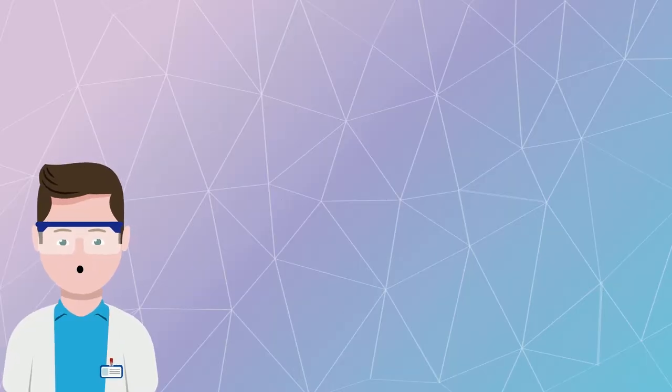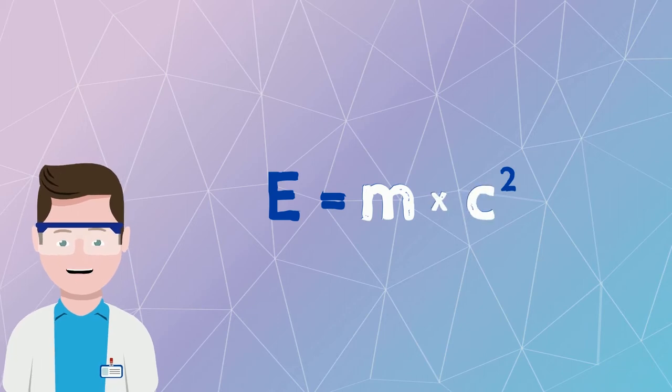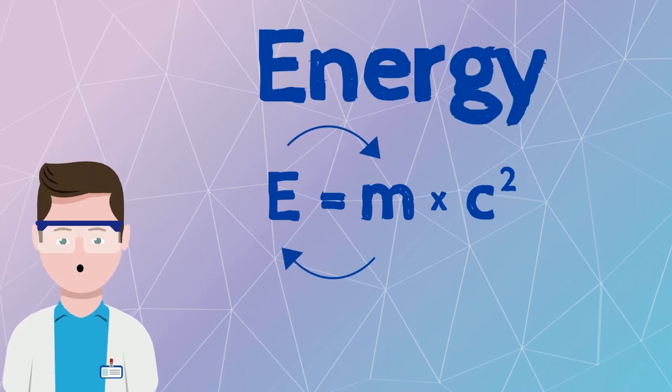Remember this famous equation here? Energy equals mass times c squared, where c is the light speed. Okay, so Einstein demonstrated that mass could convert into energy. So, part of the mass on the product's side is converted to energy.